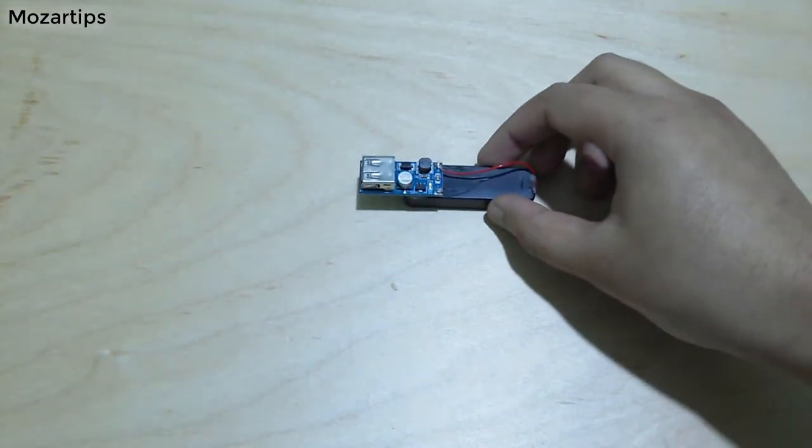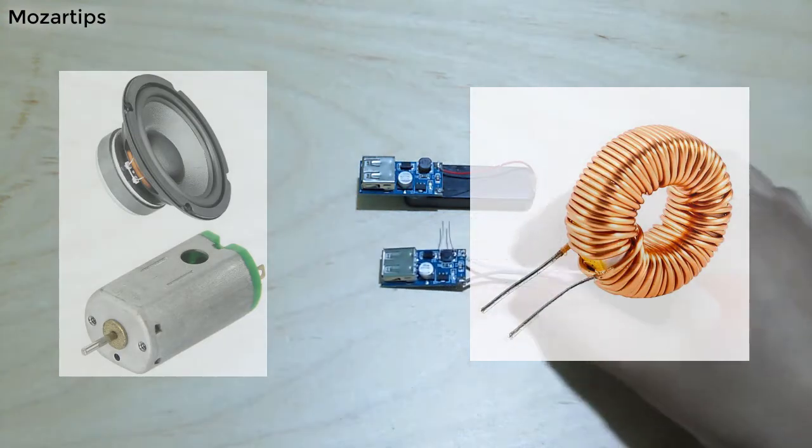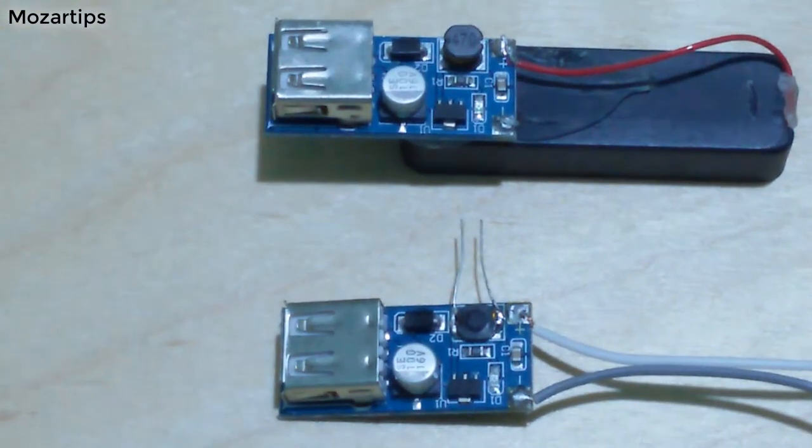Hi, in this video I will demonstrate how you can use a speaker or a motor as an inductor. These are small step-up boost converters. They can step up 0.9 volt to 5 volts DC.